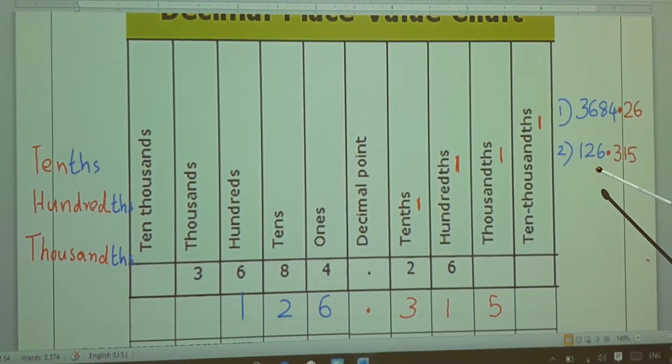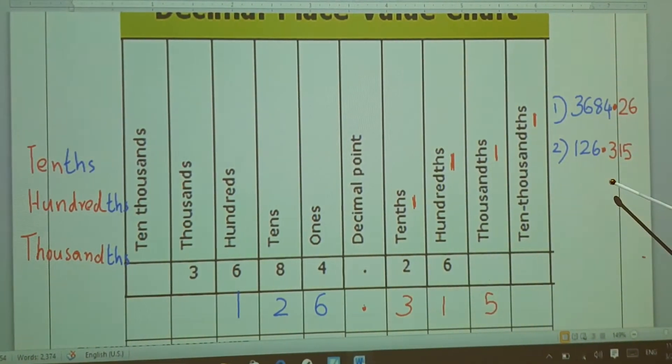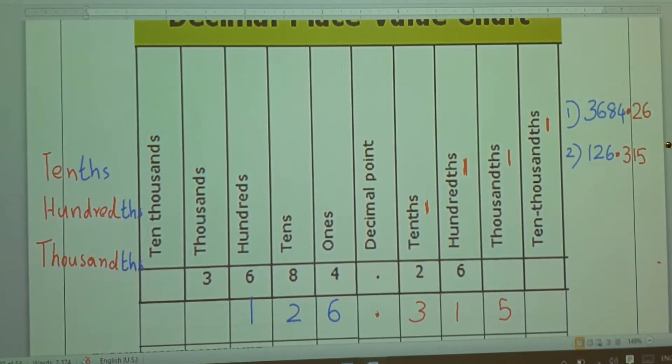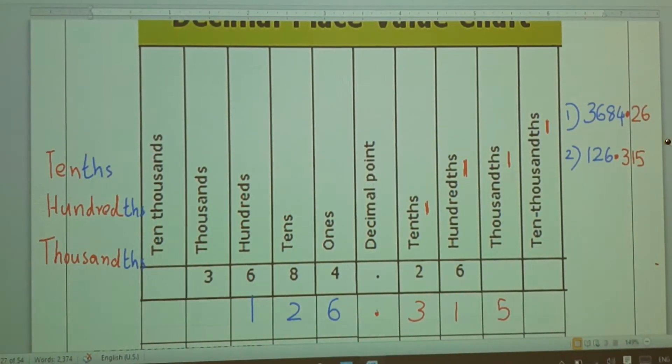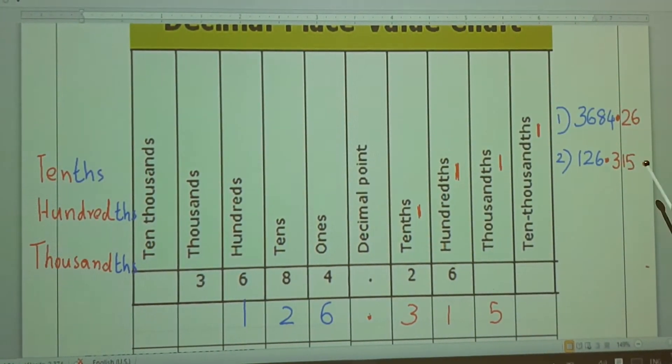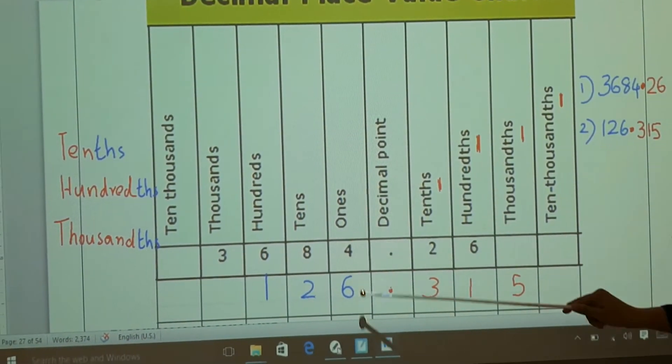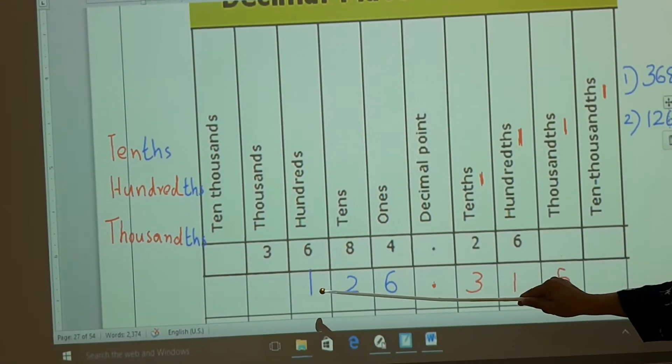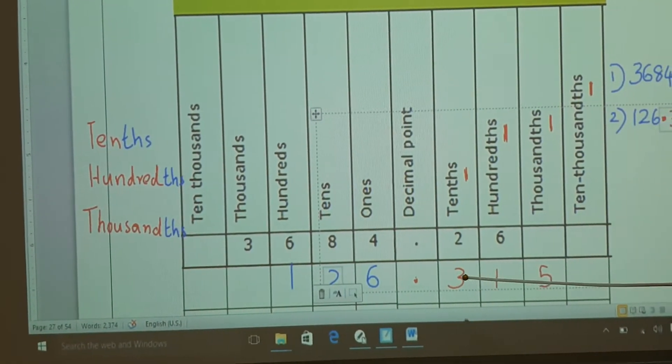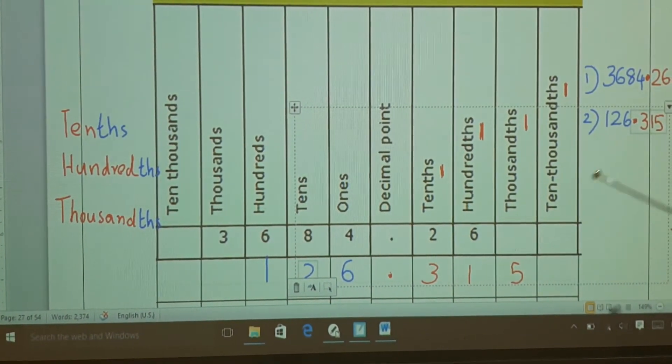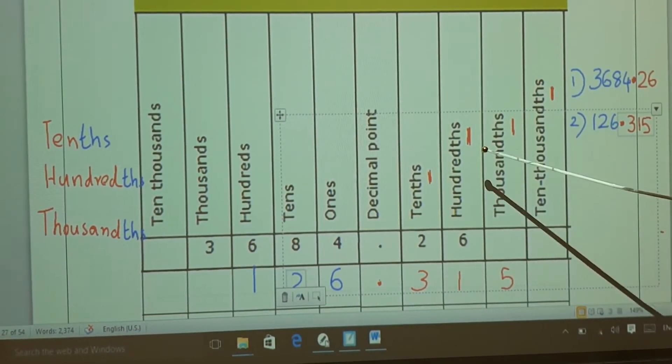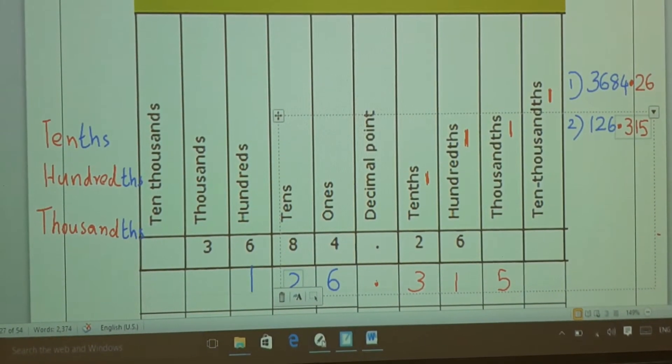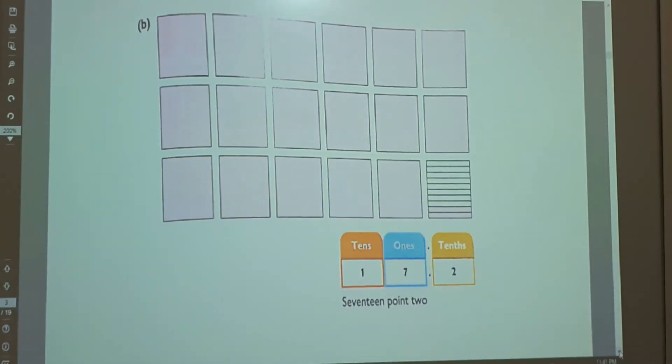Coming to the next example, 126.315. We know in the decimal place which number is coming? 315. That is tenth, hundred, thousand. Six comes in the unit place or ones place, two comes in the tens place, and one comes in the hundreds place. Again, after the decimal, where's the first number? Three. Three comes in the tenths place, one in hundredths place, five in thousandths place. This is how we write the numbers with the place value chart.